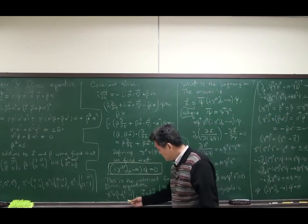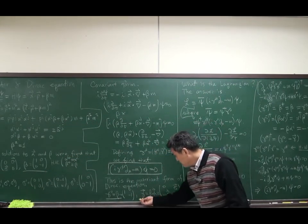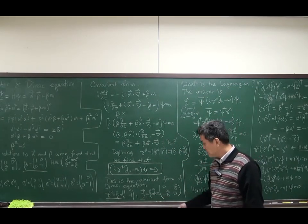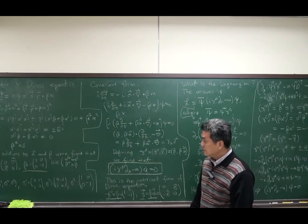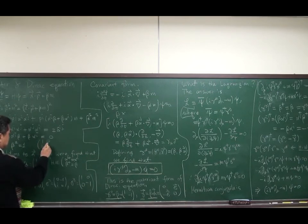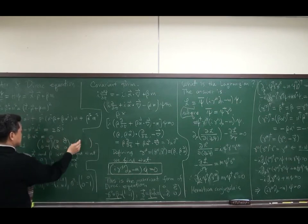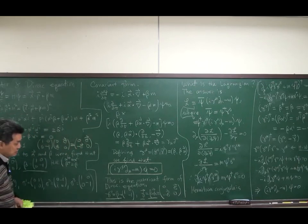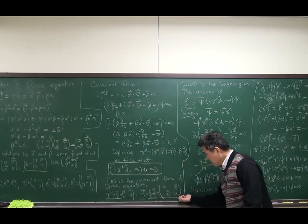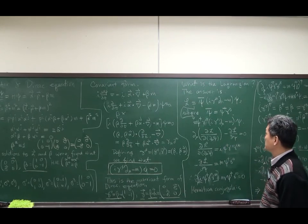Here, gamma matrices are defined to the gamma 0 is beta. And gamma vector, which is also matrix, is beta alpha. If I multiply beta here, beta and alpha. alpha is here. Then, I have 0 minus sigma sigma 0. So, spatial component of gamma matrices are sigma minus sigma, which still have the off-diagonal term.